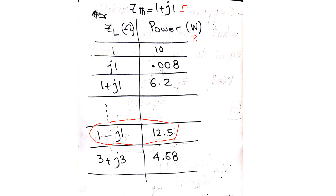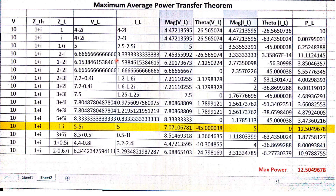For convenience, I have generated an MS Excel worksheet with all formulas set up. The source voltage V is given as 10V, Z_thevenin is fixed, and in the ZL column you can try different values. We see that when ZL equals 1 − j1, which is the complex conjugate of Z_thevenin (1 + j1), we get the maximum power of 12.54W. For any other chosen value, the power PL is smaller than this.